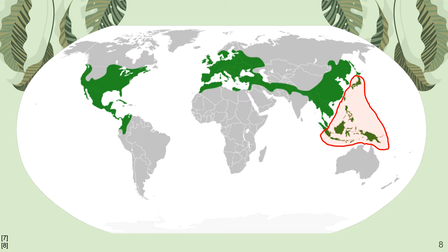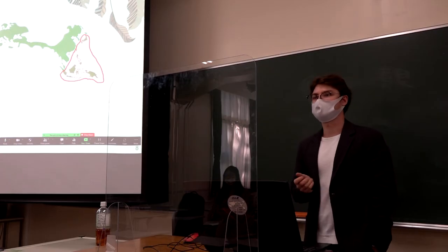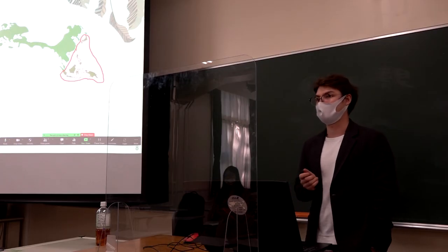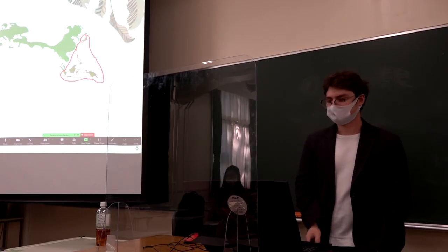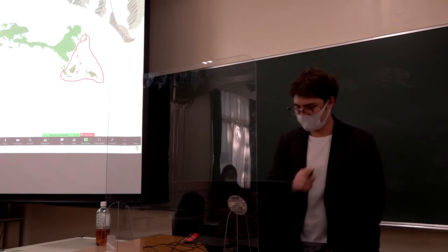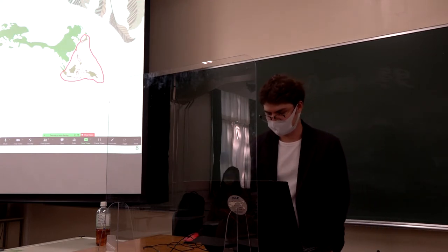Here we can see the range of the oak ambrosia beetle. It's mostly found in Asia, and in Japan it has its northern distribution limit — it's not found in Hokkaido, although we will return to this point shortly.